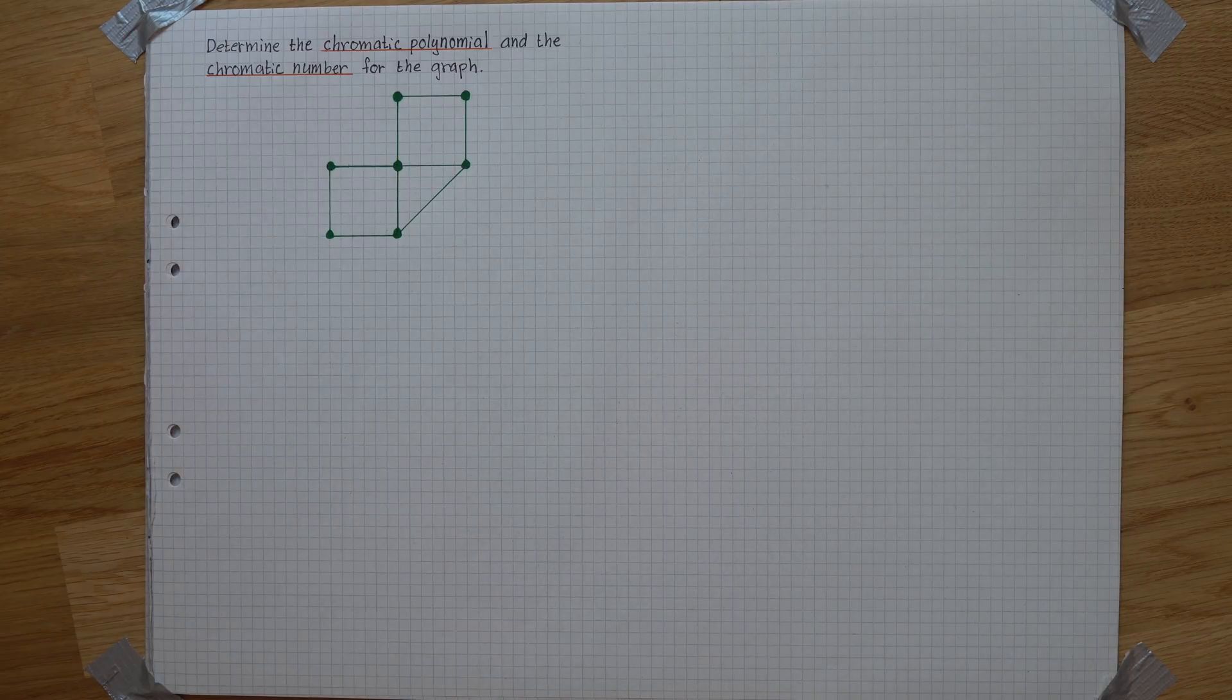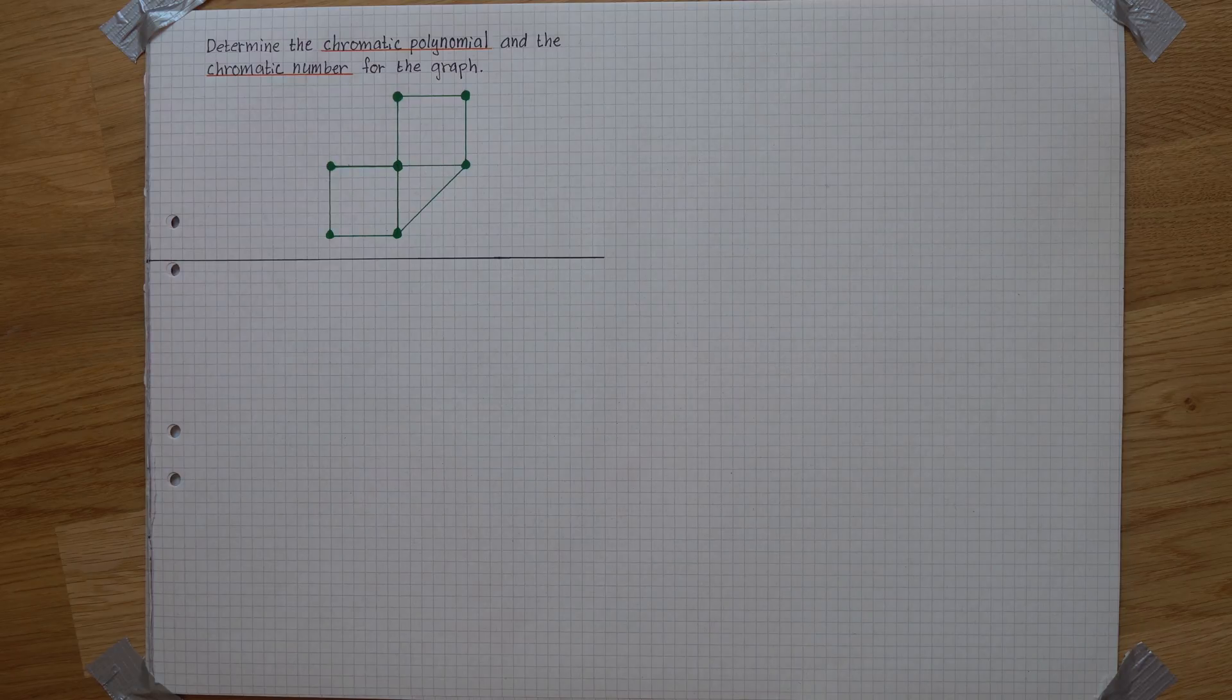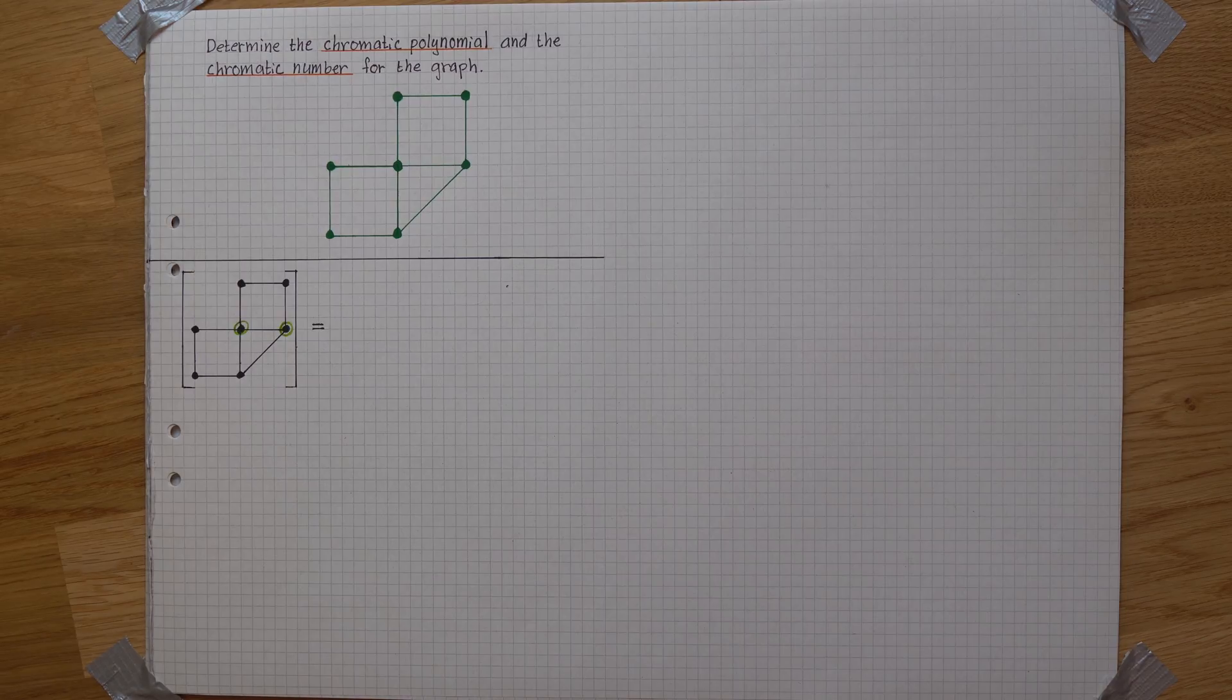We'd like to determine the chromatic polynomial and the chromatic number for the graph. Start by dividing the graph in these two nodes.